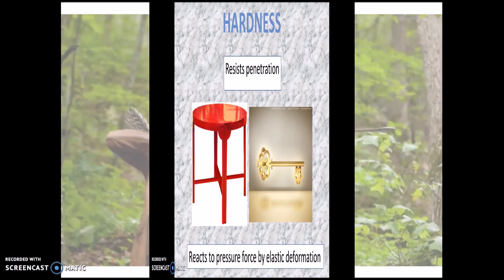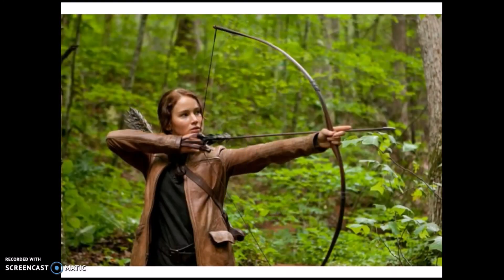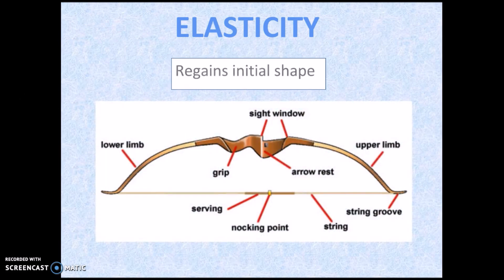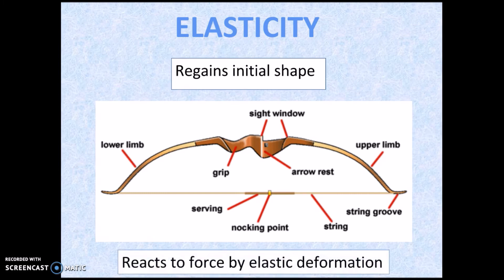You might recognize this character Katniss from the movie The Hunger Games. Notice that she is holding a bow and arrow. The mechanical property of the material for that bow is elasticity — it regains its initial shape. It would be disastrous if you had a bow and arrow that totally fell apart every time you used it. Elasticity reacts to forces by elastic deformation.